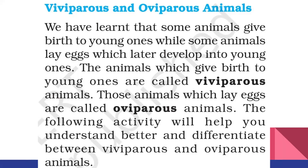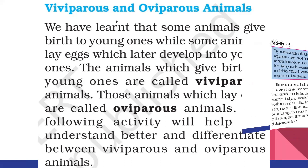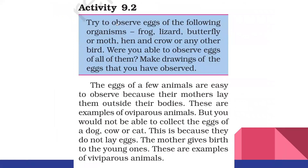You have learned about this in smaller classes too. You might have seen the eggs of hen, crow, etc. But can you see the eggs of cat, dog? No — because they are not laying eggs; they give birth to young ones. Examples of oviparous animals include most birds, lizard, butterfly, crocodile, and snakes. These animals lay eggs, and from the eggs the young ones are hatched.